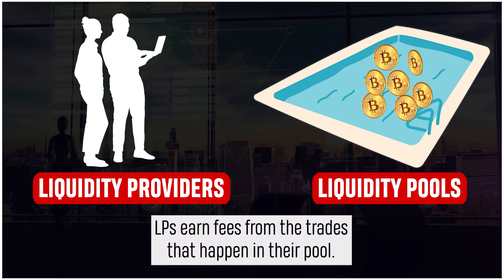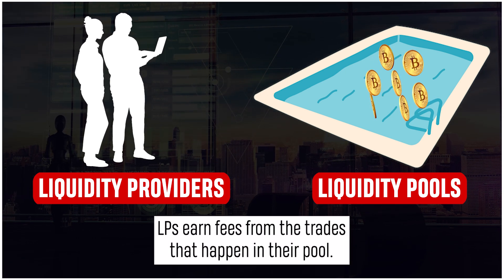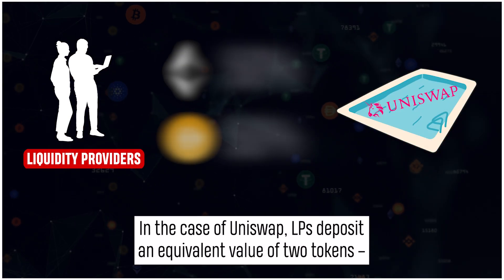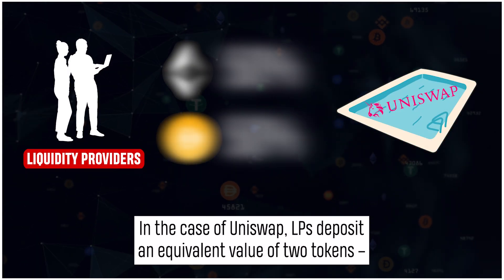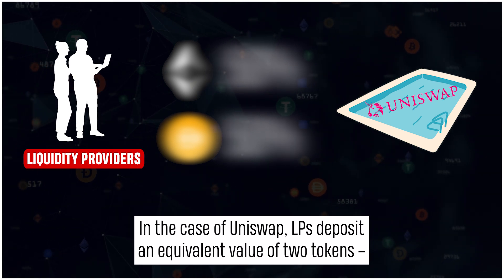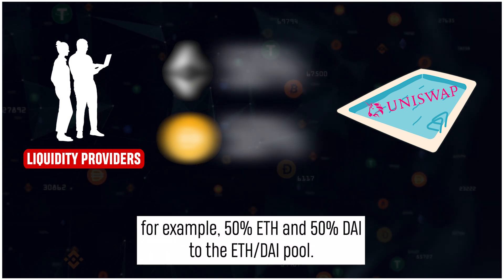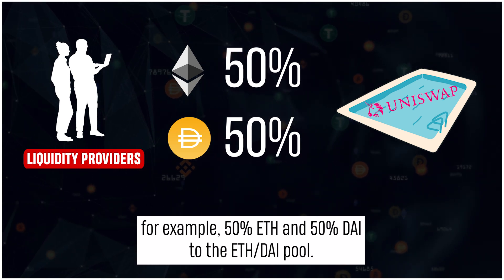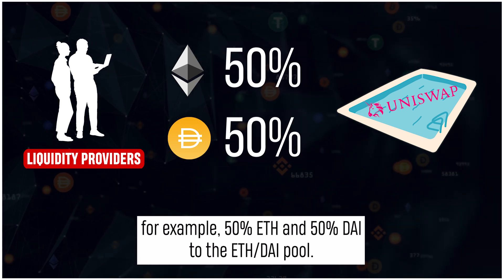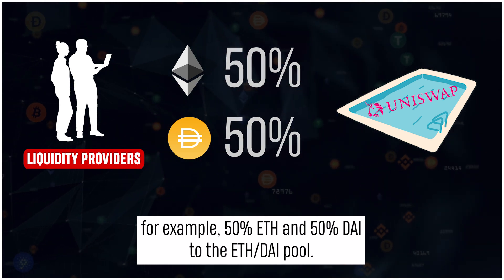Liquidity providers earn fees from the trades that happen in their pool. In the case of Uniswap, liquidity providers deposit an equivalent value of two tokens — for example, 50% Ethereum and 50% DAI to the Ethereum-DAI pool.